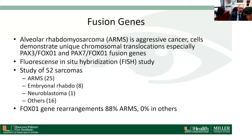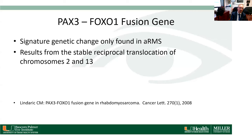The FOXO1 gene rearrangements are found in about 88 percent of alveolar rhabdomyosarcoma patients — this is the signature genetic change in alveolar rhabdomyosarcoma. The fusion gene results from reciprocal translocation of chromosomes 2 and 13.